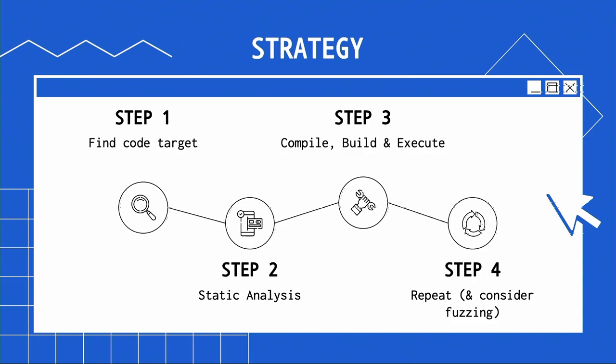So what's the general strategy? First, find the code itself, whether it's on GitHub, GitLab, or wherever. Then start running static code analysis — reviewing it yourself or using automated tools — and just start looking for bugs. After finding a lead or a minor bug, you can start to compile, build, and execute it. Add some debug snippets, the classic printf statements, and try to trigger the vulnerability.